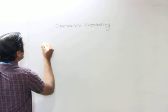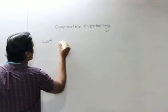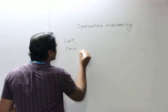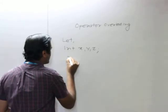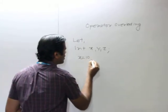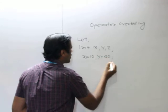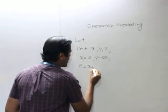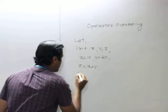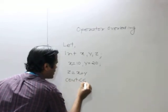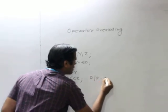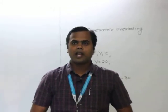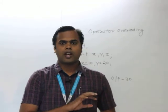If we are going to declare three variables — integer x, y, and z — and if I take the value of x equal to 10 and y equal to 20, I can easily do z = x + y. Then if I print the value of z, I will get the output 30. This means we can perform arithmetic operations directly on built-in data types.